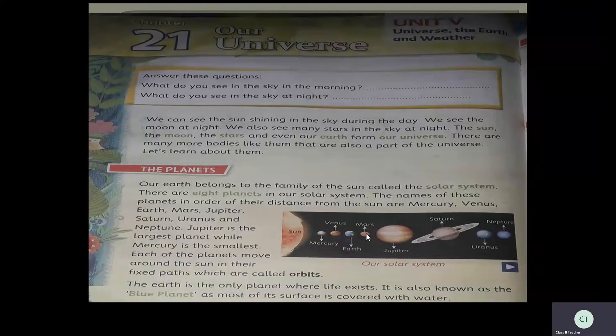Our earth belongs to the family of the sun, together known as the solar system. There are eight planets. According to their distance from the sun, they are: Mercury, Venus, Earth, Mars, Jupiter, Saturn, Uranus, and Neptune. Among these eight planets, Jupiter is the largest planet and Mercury is the smallest planet.